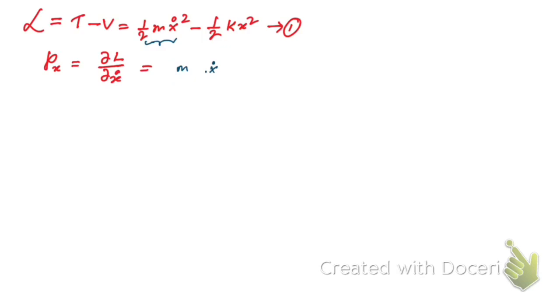The two cancels, so only m x-dot is left. We can write px is equal to m x-dot, which implies x-dot is equal to px by m.